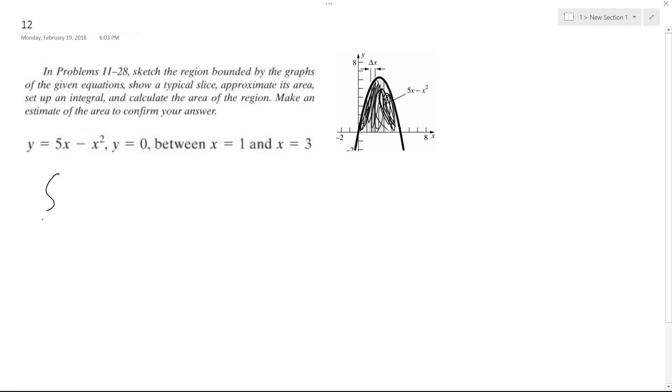So we're going to integrate from one to three, 5x minus x squared, dx, and then what we end up with is 5x squared over 2 minus x cubed over 3 from one to three.